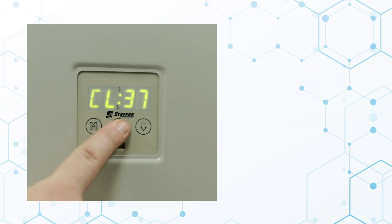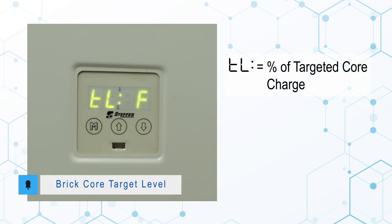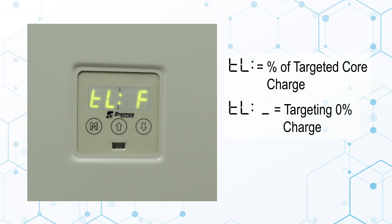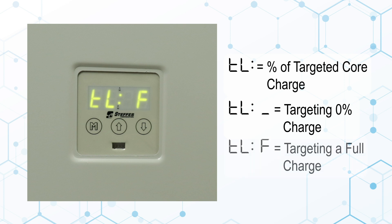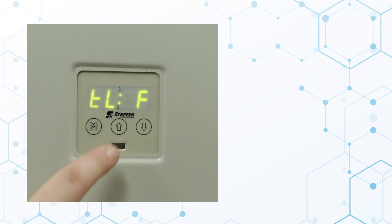Press the up arrow once more, and the display will show TL and a number, indicating the current percentage of brick core charge targeted by the hydronic system. TL underscore indicates the system is not targeting any heat in the brick core, and TLF indicates a full core charge target level. Press the up arrow again to return to the normal operating display.